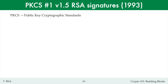PKCS number 1 version 1.5 is an early standard for RSA signatures from 1993. PKCS stands for Public Key Cryptographic Standards. This standard was widely used in practice in the 1990s, and so, even though it's outdated, you can still find applications that use this variant of the RSA signature scheme. For example, it's still used to sign server certificates in TLS.